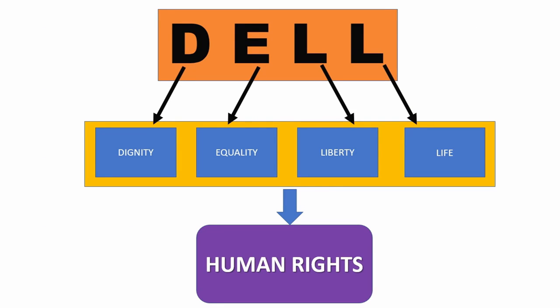Let us first understand what human rights are. Remember this word: DEL — D for DIGNITY, E for EQUALITY, L for LIBERTY, and L for LIFE. These four are termed as human rights. These are the rights guaranteed by our constitution and are also enforceable by courts in India, meaning whenever these rights are violated, we can directly approach the court.